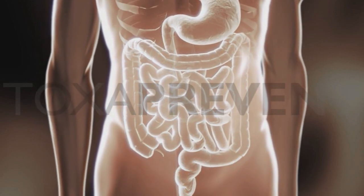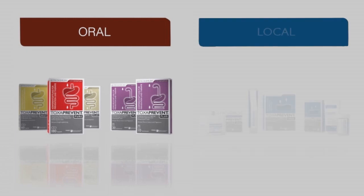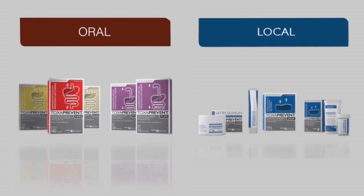Toxaprevent products can be applied in three different ways: orally, in capsule or powder form. Powder is used for illnesses in the upper digestive tract from the mouth to the stomach. Capsule products help with illnesses in the lower digestive tract, from the duodenum to the large intestine. And local application on the skin - powders, creams or ointments are applied directly on the skin.